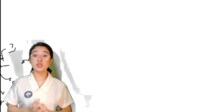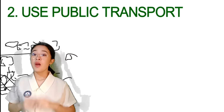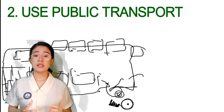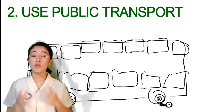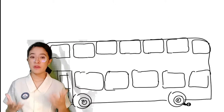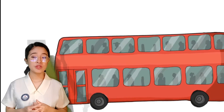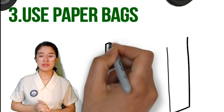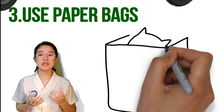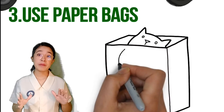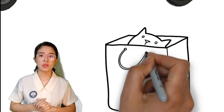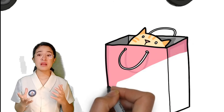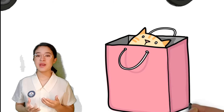Second, use public transport. Riding the bus or train is another great way to avoid using your vehicle and reduce carbon emissions. Third, use paper bags. Try to avoid plastic bags because they are not biodegradable and will hurt the planet. Use paper bags and don't forget to reuse them.